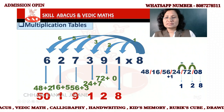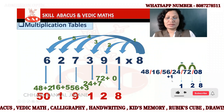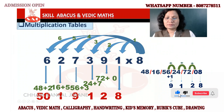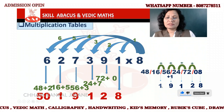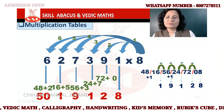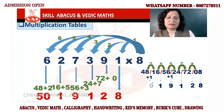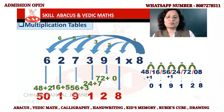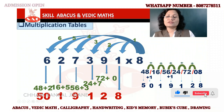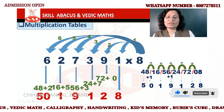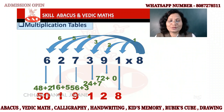This is the answer. 5 plus 6 = 11, means 1. Then 1 plus 8 = 9. Then 9 plus 1 = 10. Then write 0, carry 1. Then 4 plus 1 = 5. So the answer is 5 0 1 9 1 2 8. Then 1 plus 8 = 9. I hope all of you understood. See you in the next video. Bye bye.